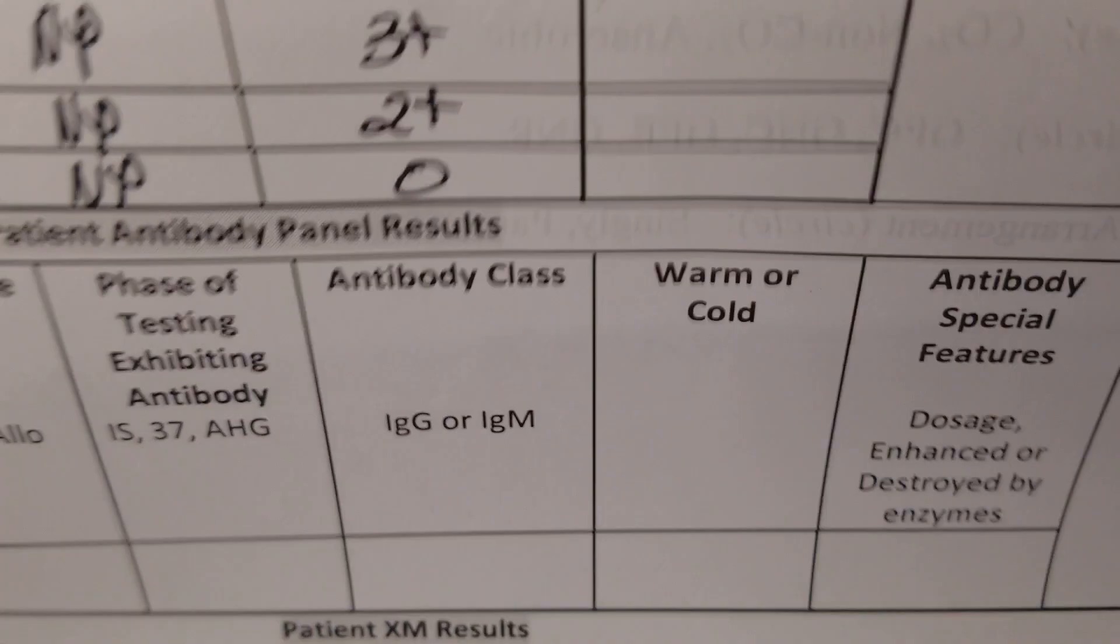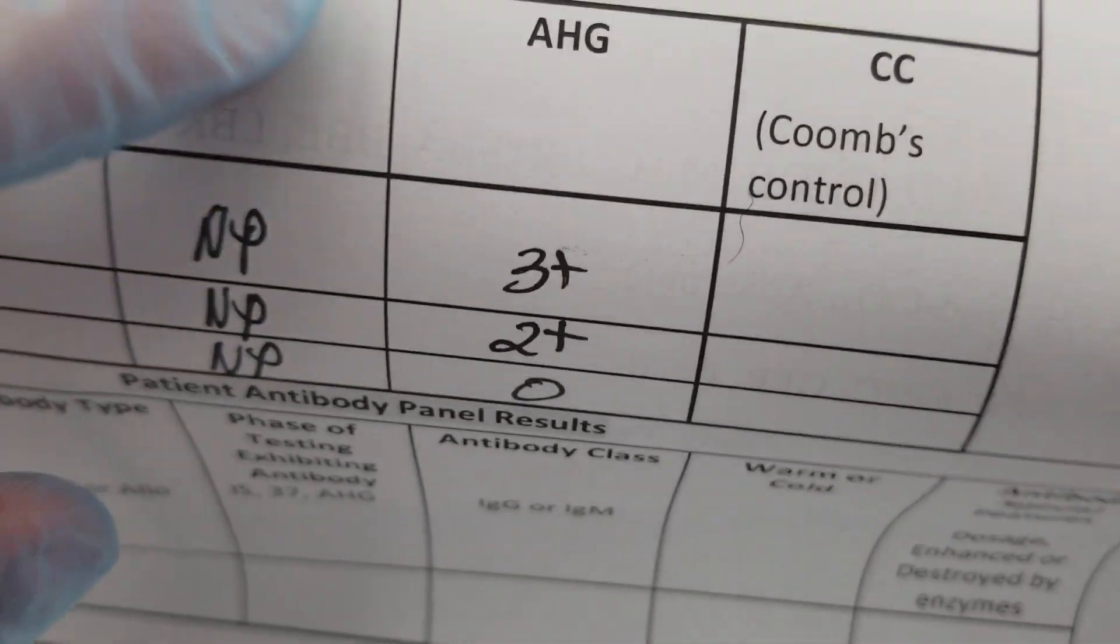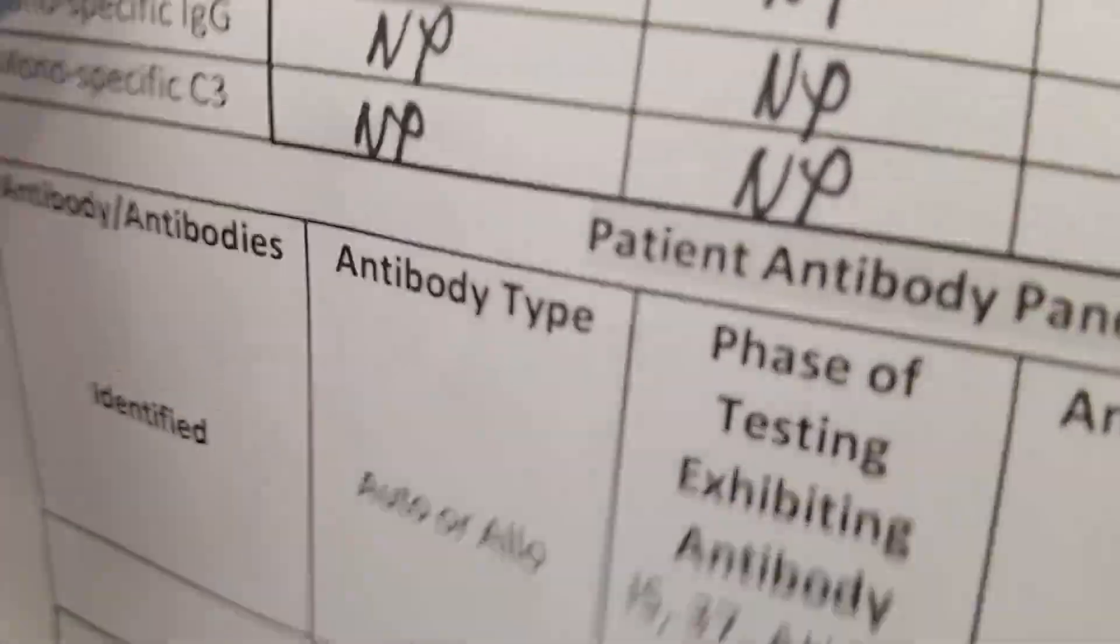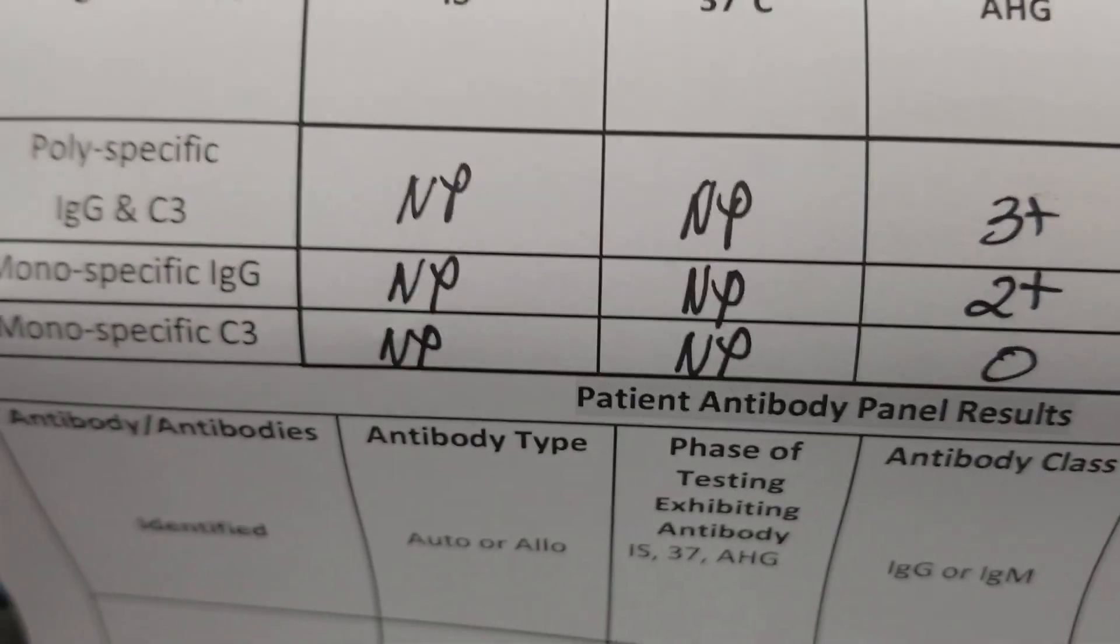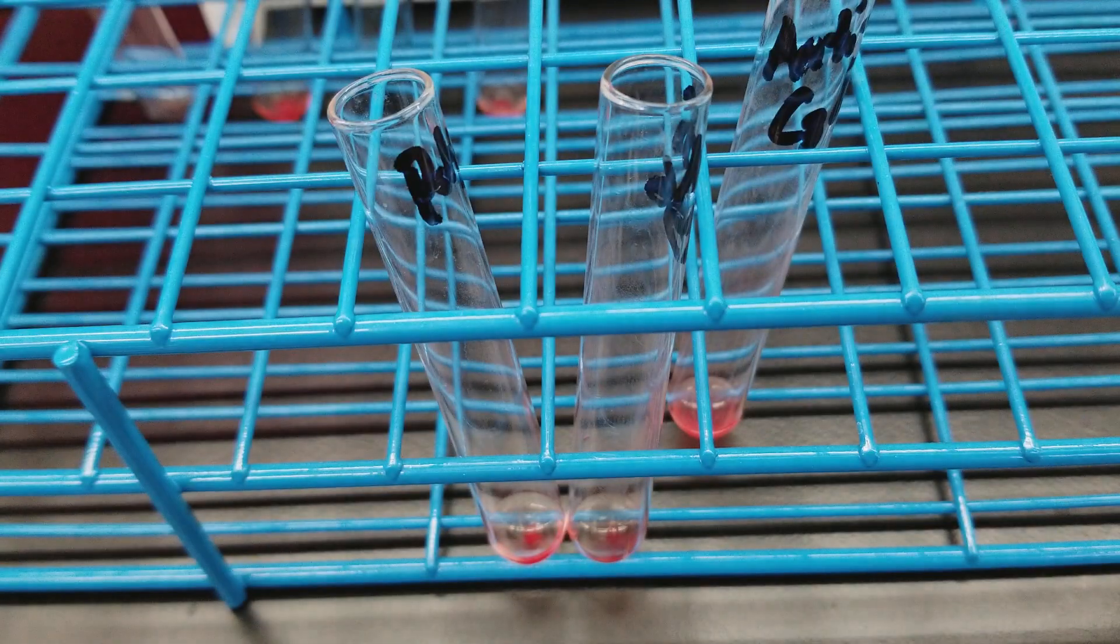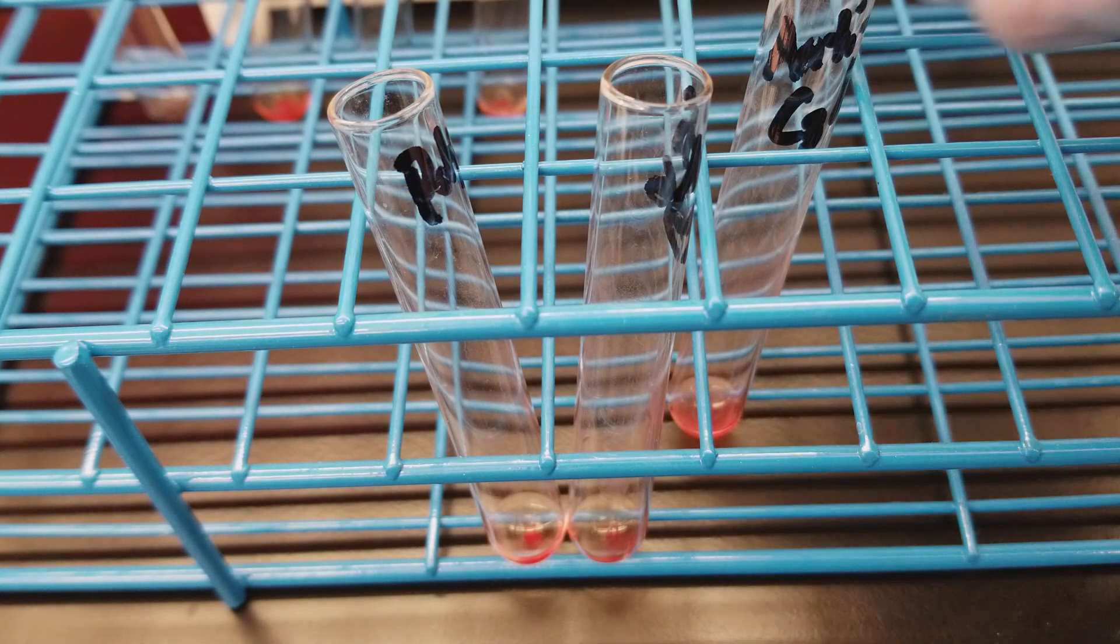So here are our results. We have the DAT results of three plus, two plus. So I'm going to remove these columns actually. But we have the polyspecific with three plus, the mono IgG was two plus. And then we're going to add check cells to the negative one, which is this.